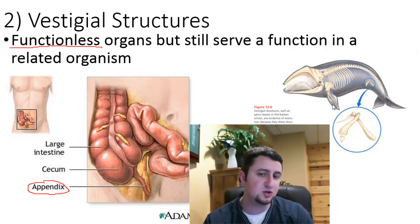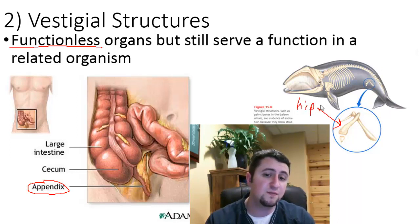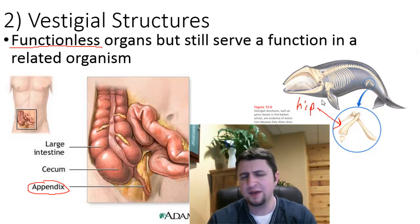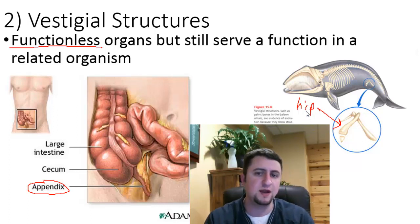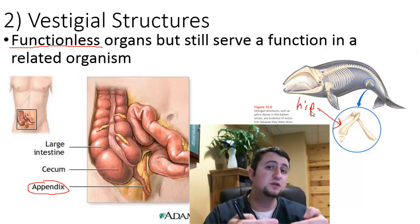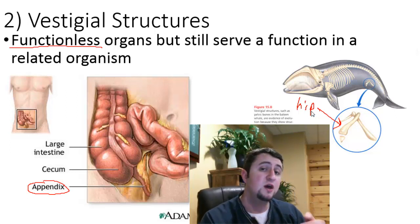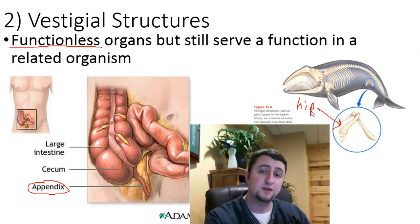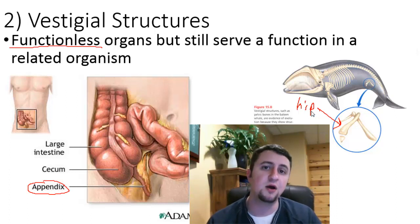Another good example of a vestigial structure is the hip bone of whales. Underneath all that flesh of whales are bones that look like hips, but they don't really serve any function for the whale — they are non-functional hips. The evidence here asks: why would these structures be in these organisms if they didn't serve any function? Probably there was a common ancestor that used those structures for living or surviving. They were a good adaptation for those ancestors, but over time they lost their function and are still carried around as baggage.